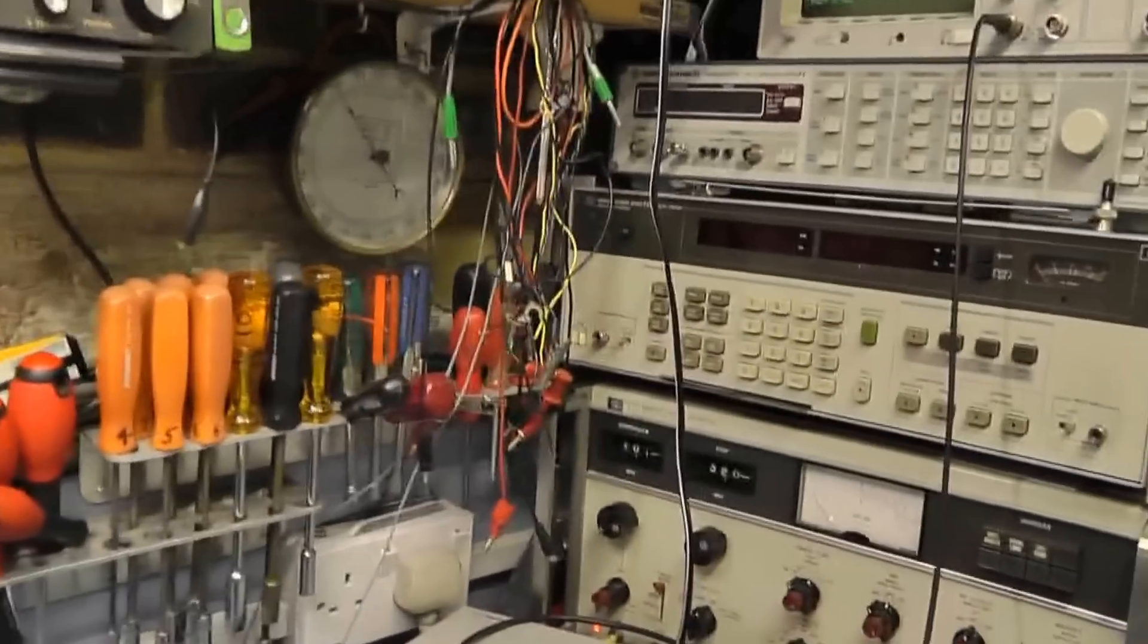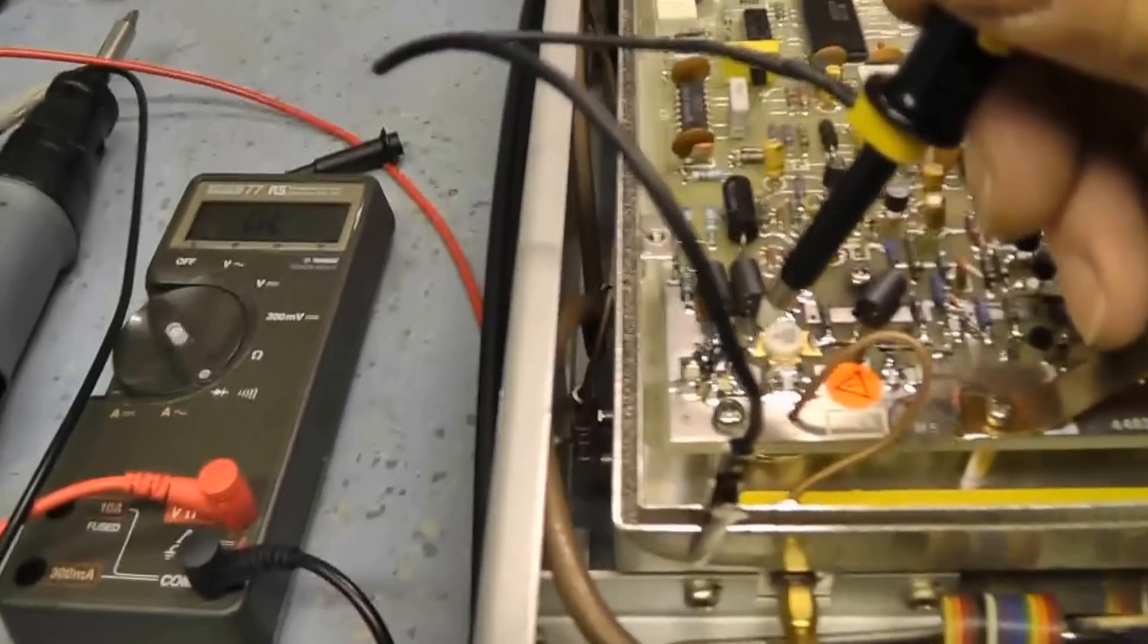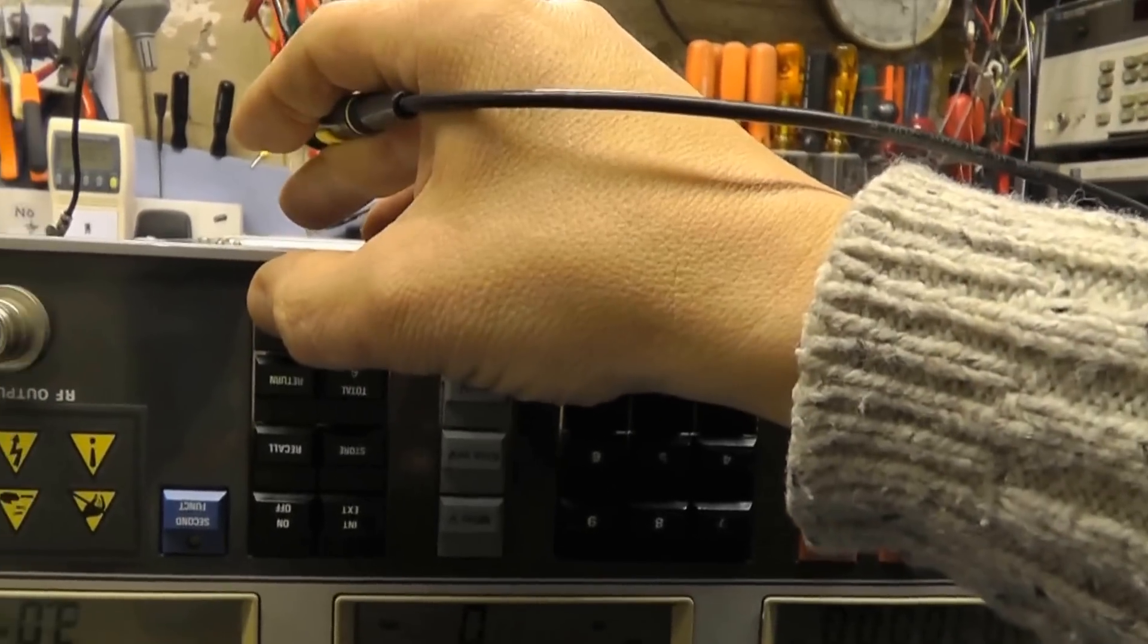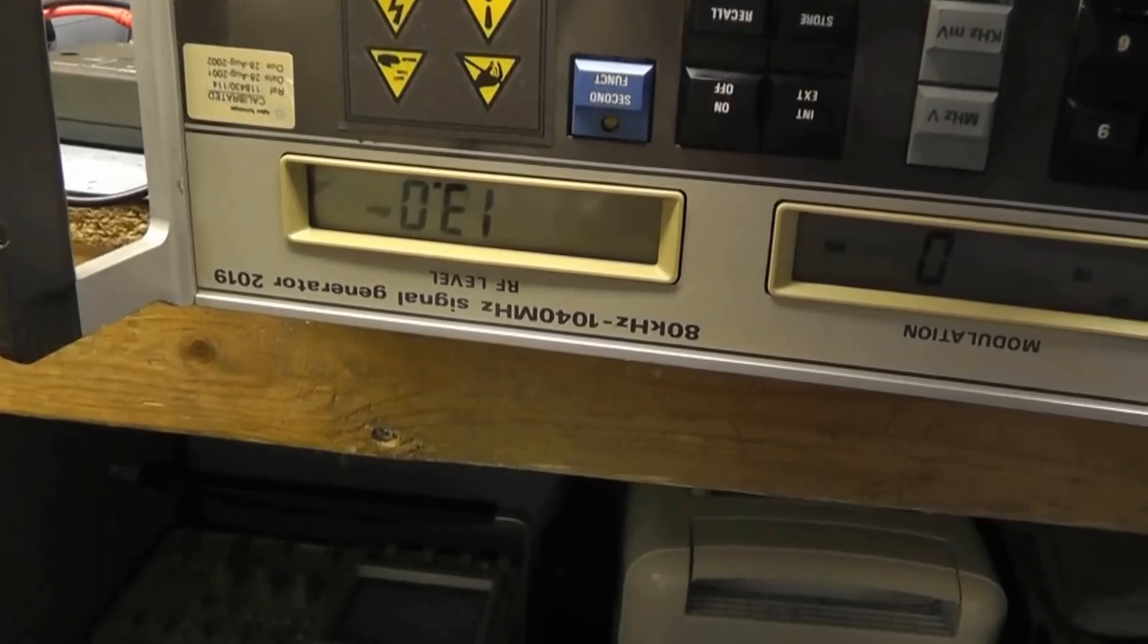Okay, maybe two volts per division is a bit optimistic. Now in theory, this is all before the attenuator, so whatever I do with the attenuator shouldn't make any difference. So I'll select RF level, set it to plus 13 dBm. Shouldn't make any difference to the level at all.